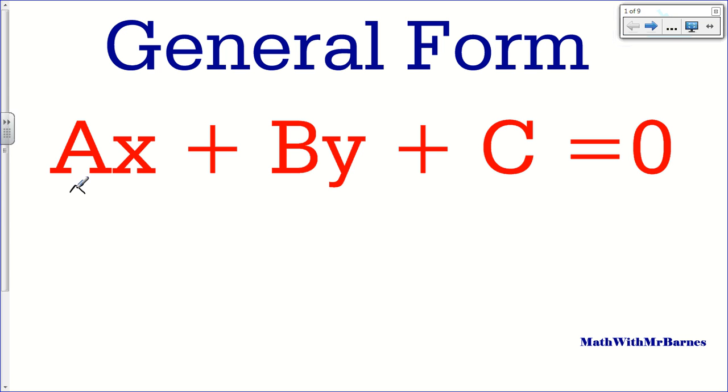So A has to be a whole number, it cannot be negative. It must be a positive whole number, it cannot be zero. Or actually I guess I could say it has to be a natural number. So it has to be one, two, three, four, five, and so on. I guess it could be zero but then it wouldn't really be general form, there'd be no x coordinates so then it'd just be a horizontal line. These two guys can be negative but they cannot be fractions or decimals. So they must be integers. They can be negative or positive but no decimals or fractions.